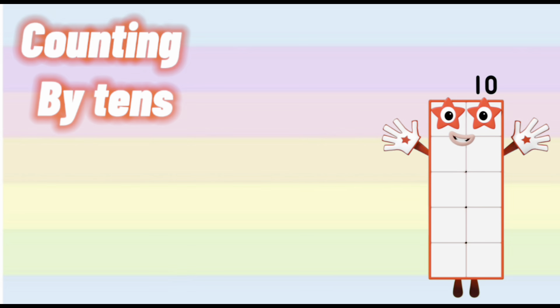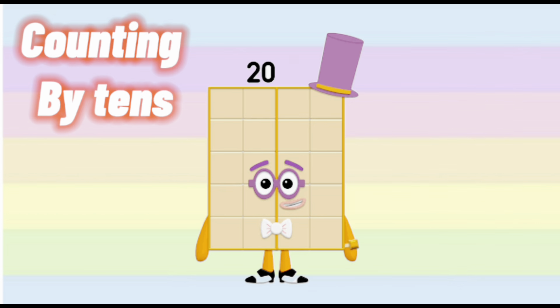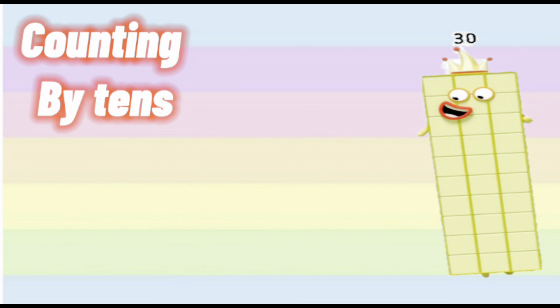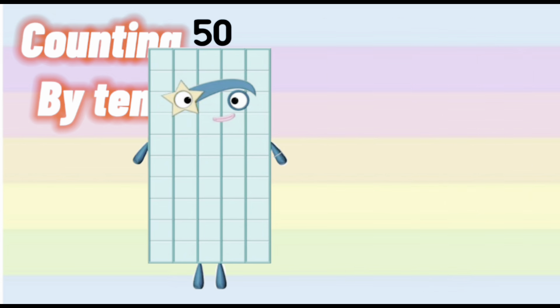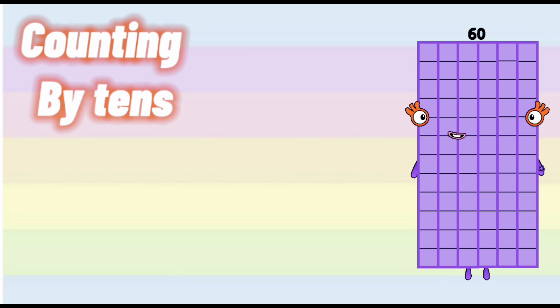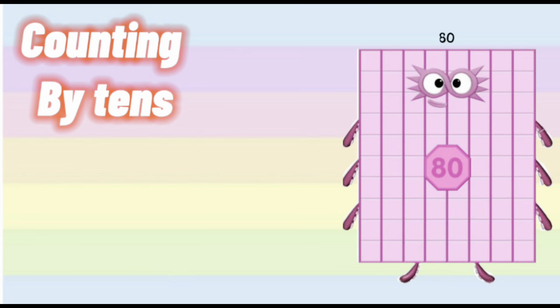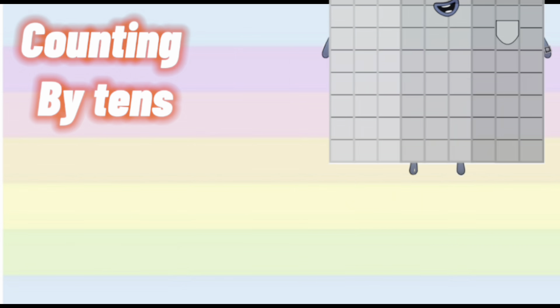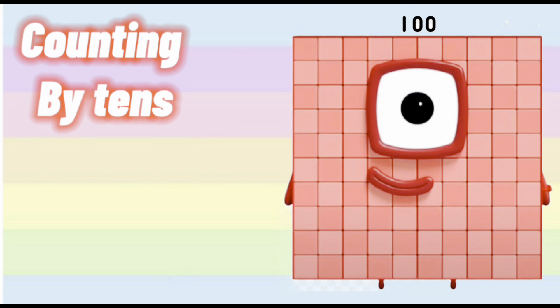Let's start with counting by tens. Ten, twenty, thirty, forty, fifty, sixty, seventy, eighty, ninety, one hundred.